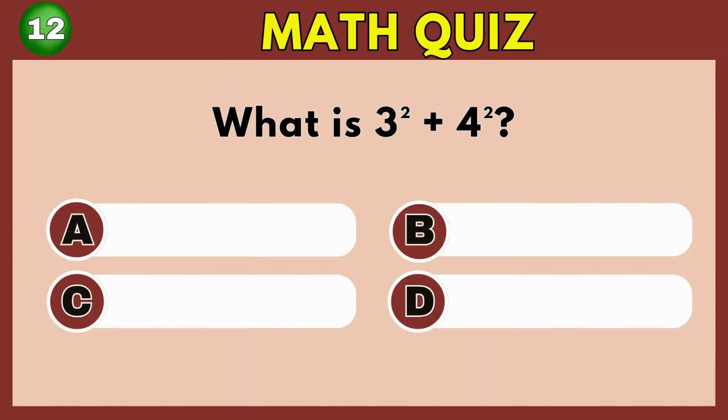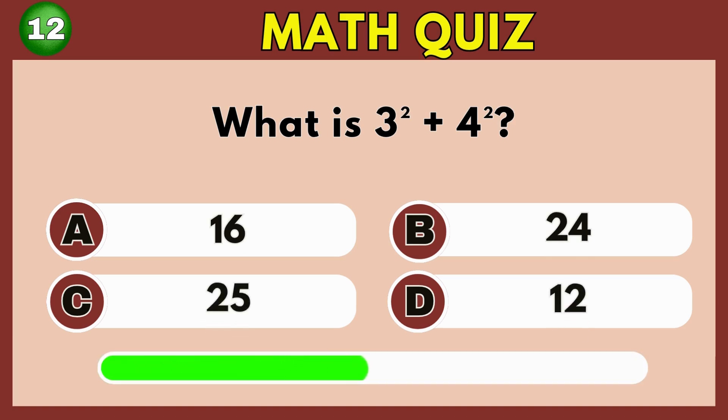What is 3 squared plus 4 squared? Option C. 25.